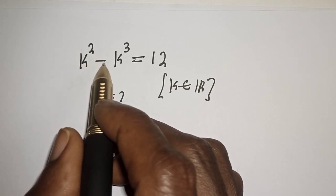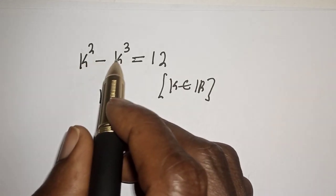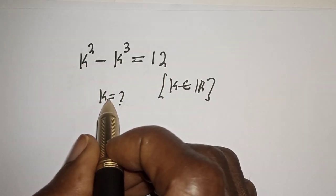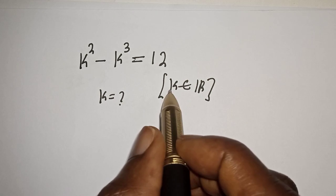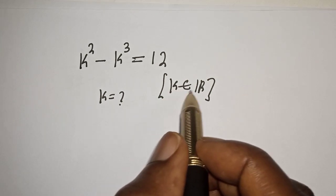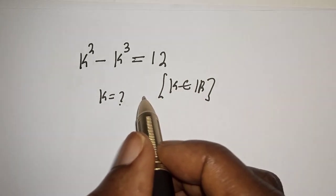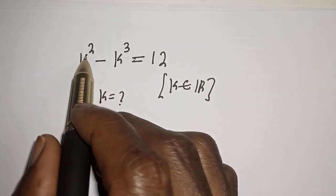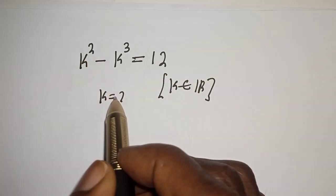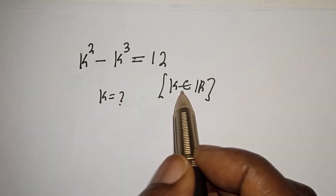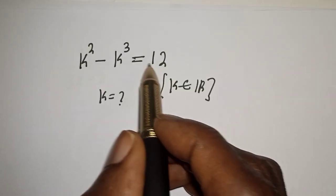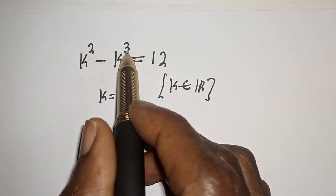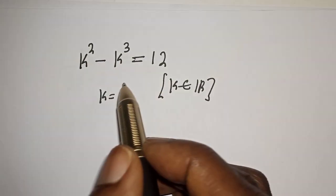k squared minus k raised to power 3 is equal to 12. What is the value of k, where k is a member of the real numbers? Hi everyone, welcome to my class. In this class, I want to find the value of k from this given equation: k squared minus k raised to power 3 is equal to 12.